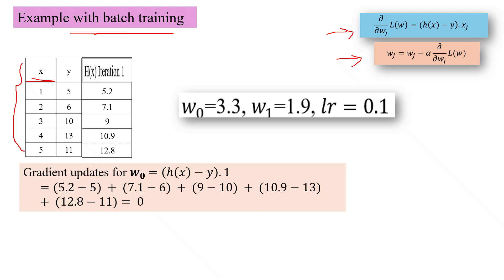The weight gradient update is h(x) minus y times x_j. For w0 we do this for all examples since this is batch gradient descent. For w0, x_0 is consistently 1, so we compute h(x) − y for each point: 5.2 − 5, 7.1 − 6, 9 − 10, and so on. When we add up all these terms, the sum comes out to 0.